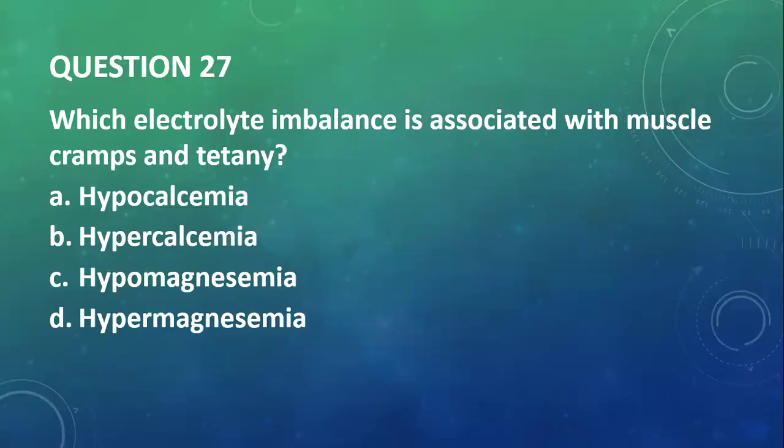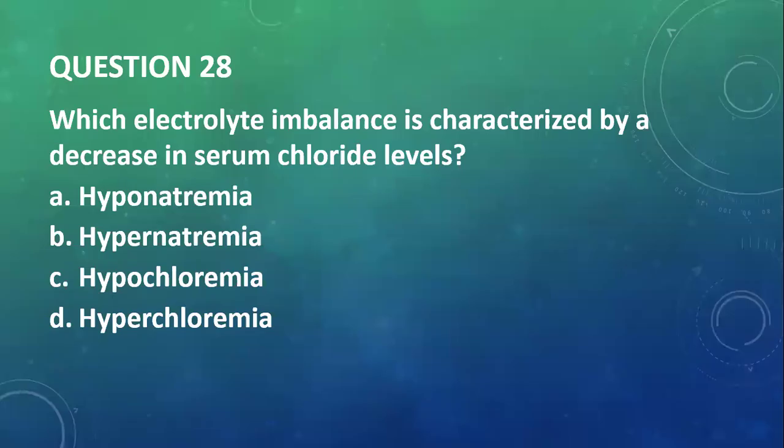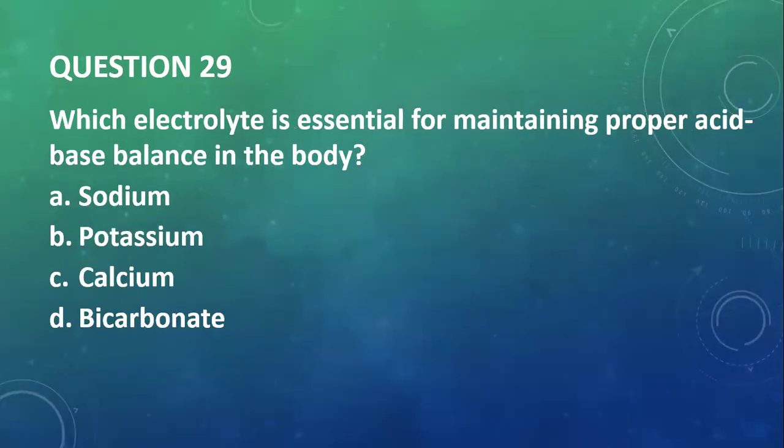Question 27: Which electrolyte imbalance is associated with muscle cramps and tetany? I will go with hypocalcemia. Question 28: Which electrolyte imbalance is characterized by a decrease in serum chloride levels? We have hyponatremia—that's low sodium, hypernatremia—high sodium, hypochloremia—low chloride, hyperchloremia—high levels of chloride. Hypochloremia.